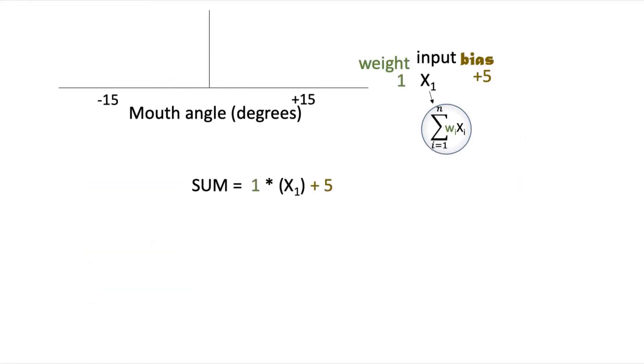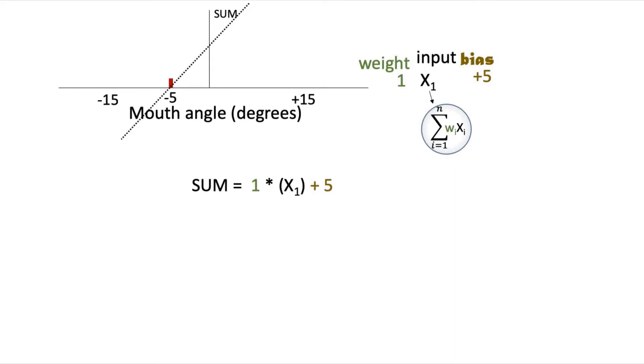Now, I want to show you what these equations represent on the graph. The equation for the sum with this 1D input is the equation for a straight line where the x-axis is crossed at negative 5. That's the value at which there is a transition from truth-telling to bluffing, because that's where the activation function transitions from outputting a 0 to a 1. We've just gone over an example of a single neuron model that can handle one-dimensional data, and I hope you now have an idea of how single neurons apply computations to data and produce predictions. We'll cement this with a second example of a single neuron model that handles two-dimensional data.